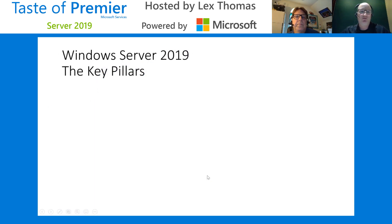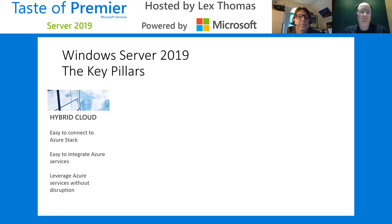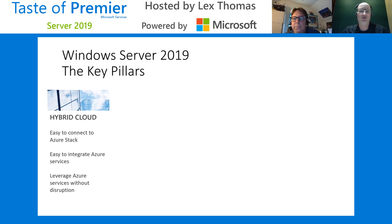Earlier I talked about Server 2019 investing in four key pillars. Hybrid Cloud is one of them. We wanted to make sure that Server 2019 is easy to connect into whatever you're currently using, whether it's Azure Stack or Azure. We've really designed it to integrate easily into your systems. Windows Admin Center is one of those features that allows you to connect to both your on-prem and cloud servers for management, as well as integrate things like Azure Recovery Services across all of your different platforms.